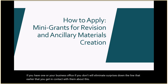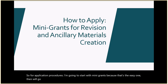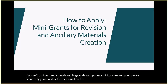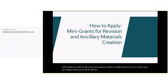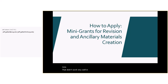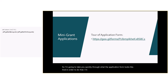For application procedures, I'll start with mini-grants because that's the easier one, then go into standard and large-scale. If you're a mini-grantee and need to leave early, you can do so after the mini-grant section. You can always email me at jeff.gallant@usg.edu. Now I'm going to take you through what the application form looks like by changing the screen I'm sharing.